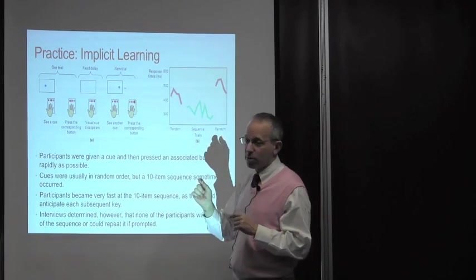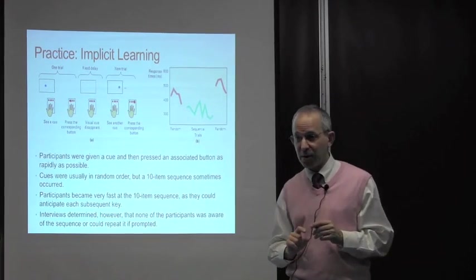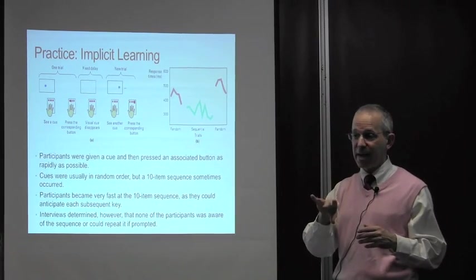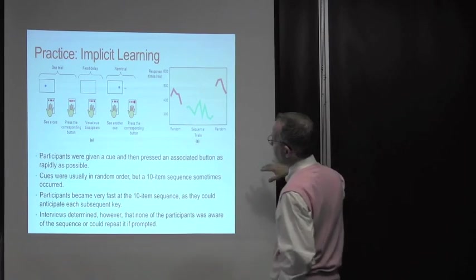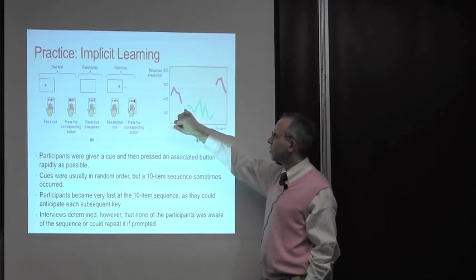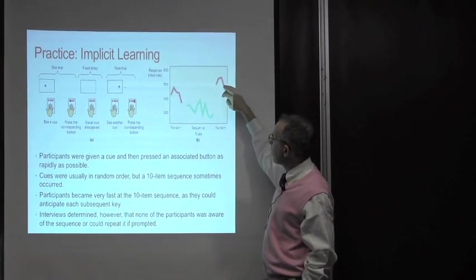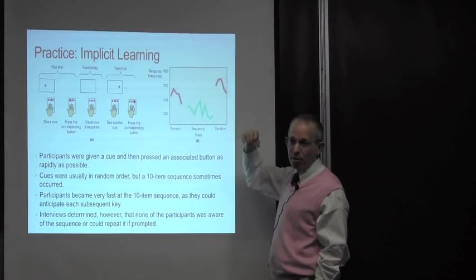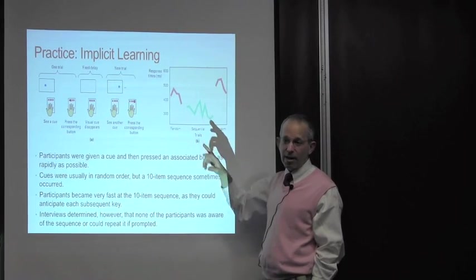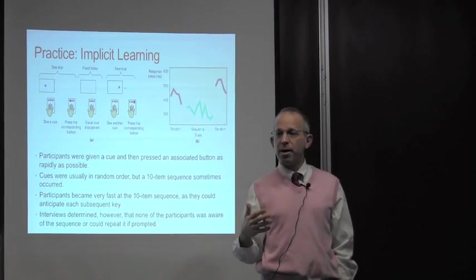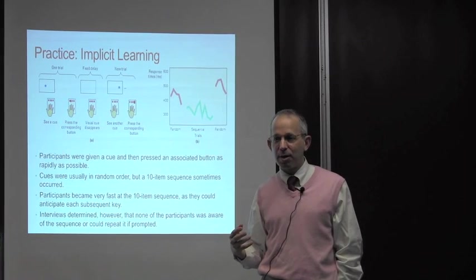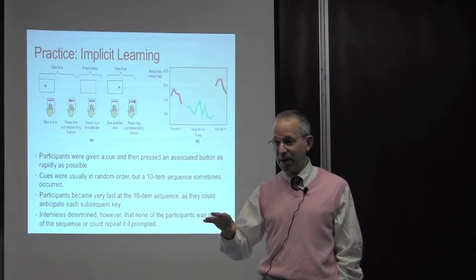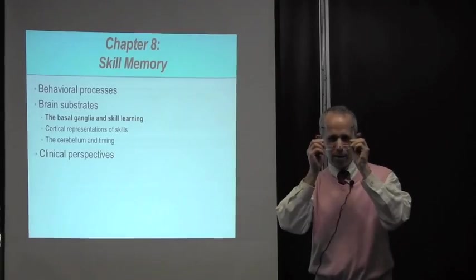What happens though is that embedded in this otherwise random sequence are particular patterns that are repeated over and over again. When those patterns come up, people aren't often aware of it. They may be completely unaware that within this so-called random sequence there's a particular pattern of 10 that gets repeated. Yet, if you look at their reaction times, on the random trials they're taking 500 milliseconds, but on the sequential trials, the ones that are part of this embedded pattern, they're going much faster. Even though they're not consciously aware that there's a repeated sequence, at some subconscious level they're able to anticipate where the next light will be.